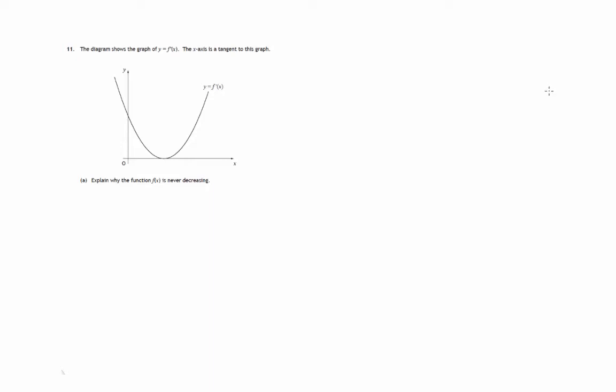This is question 11 from paper 1 of the SQA Curriculum for Excellence Specimen Higher Paper. This diagram shows the graph of y equals f dashed of x — that's the derived function graph, it's the gradient graph. We're asked to explain why this function f of x is never decreasing.